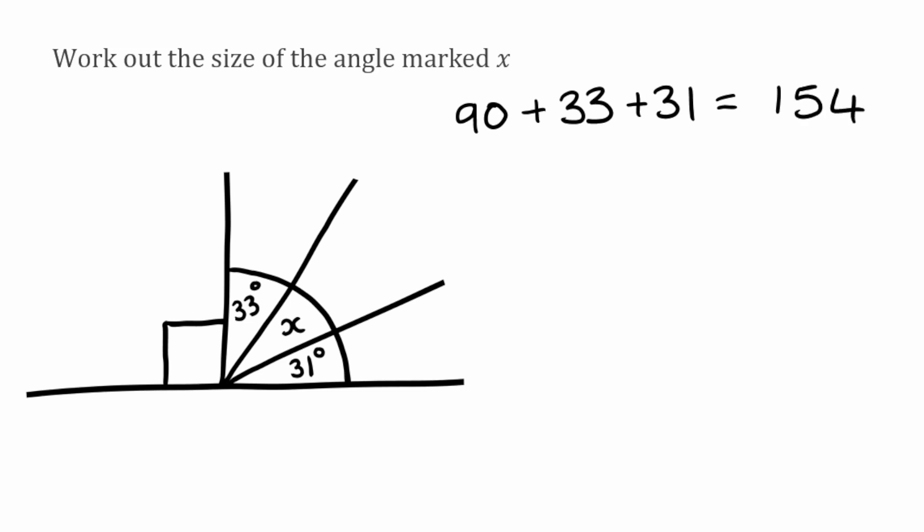So if the sum of the three angles is 154, the only one that's left over is our X. Then because we know they should all add up to 180 we're simply going to do 180 take away this 154 and that's going to leave us with 26. So our missing angle X here would be 26 degrees.